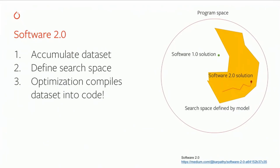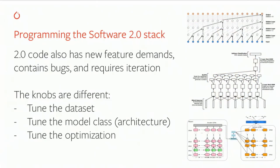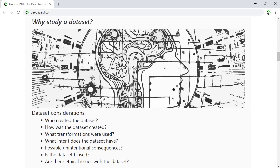Many models written in this new programming paradigm are taking over. When working with these networks in production, you are maintaining a codebase — handling new feature demands, cleaning up bugs — and this codebase requires iteration over time. But the knobs you have are iterating on the dataset, iterating on the model class, and iterating on the optimization used to train your model. In practice, acquiring and accessing data is often the hardest part of deep learning.